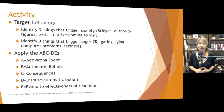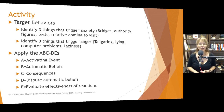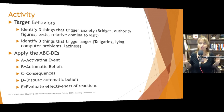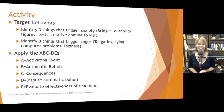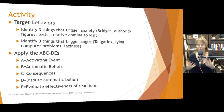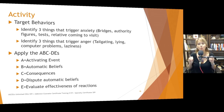Have people identify three things that trigger anxiety — bridges, authority figures, tests, relatives coming to visit, whatever it is — and three more things that trigger anger, like tailgating, lying, computer problems, and laziness. Then have them apply the ABCDEs to those situations. You can use the flip charts — at each station, have a different trigger for anxiety or anger, and have people identify potential automatic beliefs, dispute them, and then evaluate the effectiveness of their reactions.